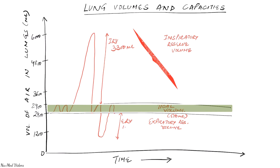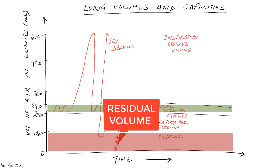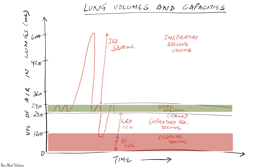Even after expiring all that air, there's still some air left in the lungs. This is called the residual volume — the amount of air still left in the lungs despite maximum expiration. You can try your best to breathe out, but you will always have some air left. That residual volume is 1.2 liters.